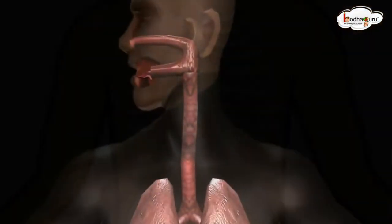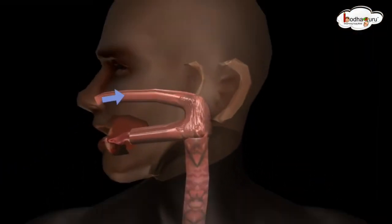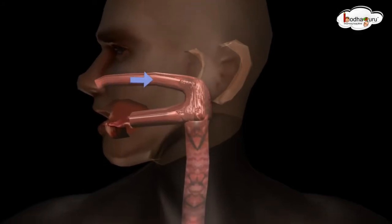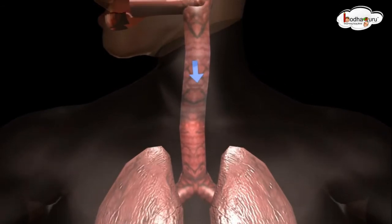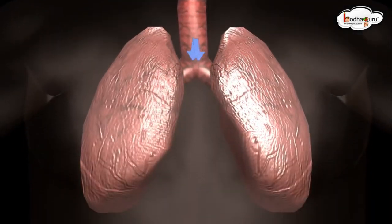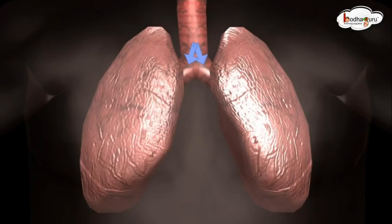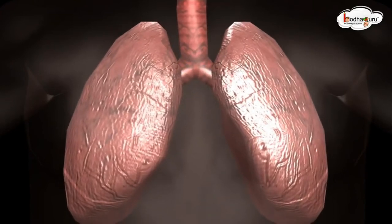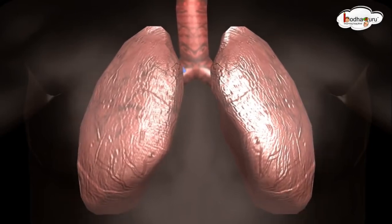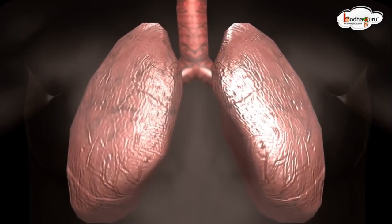Air enters our body through the nostrils of our nose. Then the air travels through a pipe called the windpipe, or trachea. The air enters the two branches of the pipe which are called bronchi. Then finally the air goes to the lungs and inflates the lungs. This is inhalation.